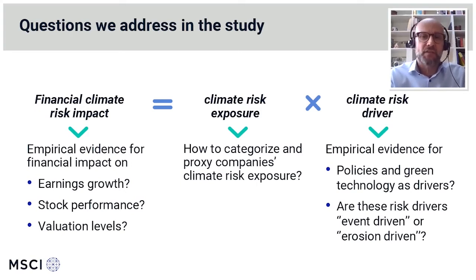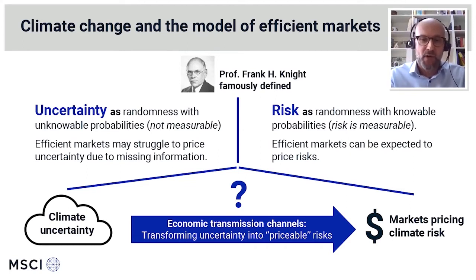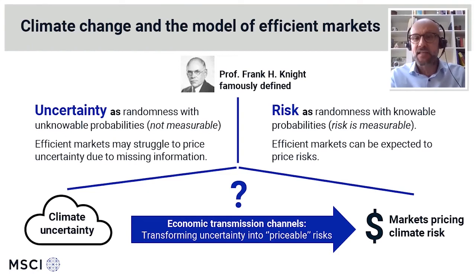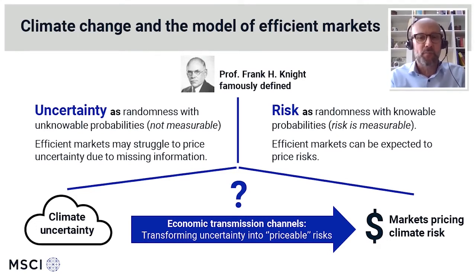To understand the risk drivers, it's helpful to recall the difference between uncertainty and risk, as defined by Professor Knight in 1921 — exactly 100 years ago. Climate risk is different from traditional risk like market risk or credit risk in the sense that there is a lot of unknown information and unknown probability distributions, and even efficient markets can only price known information. But what we've seen in the past couple of years is a lot of new information appearing in the market — the Paris Agreement, new policies regarding climate change, new technologies, electric vehicles, wind farms — and we addressed whether this flow of new information is the driver behind climate transition risk.